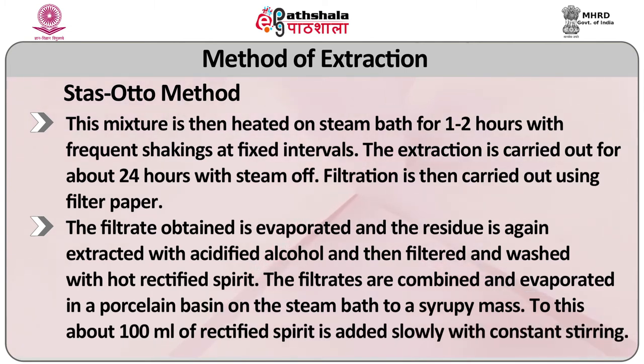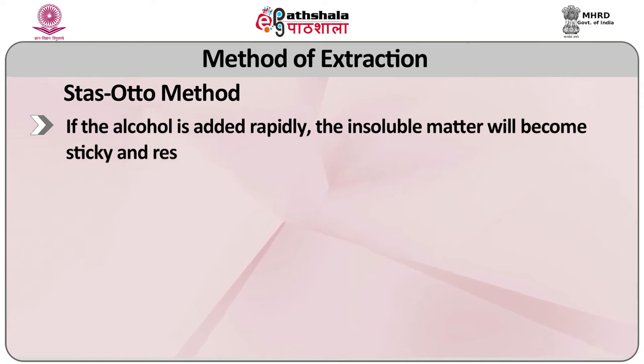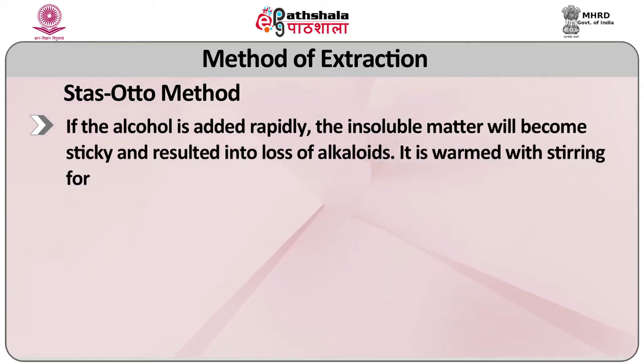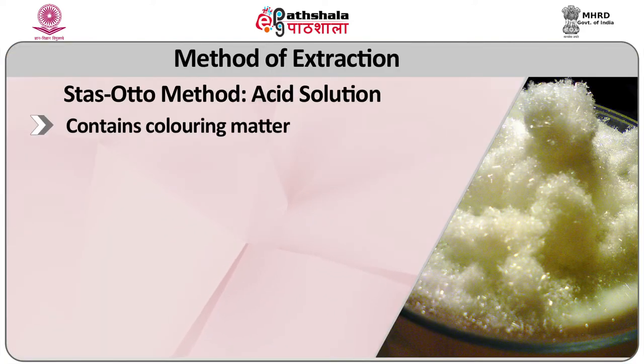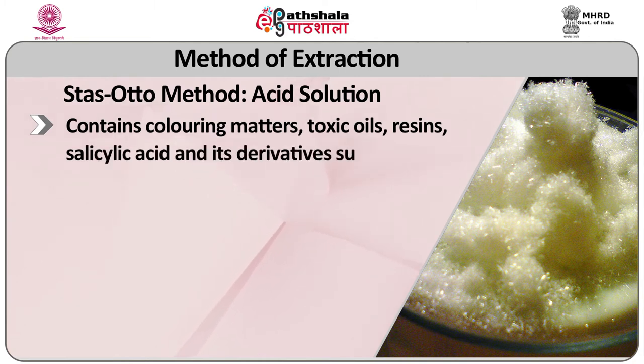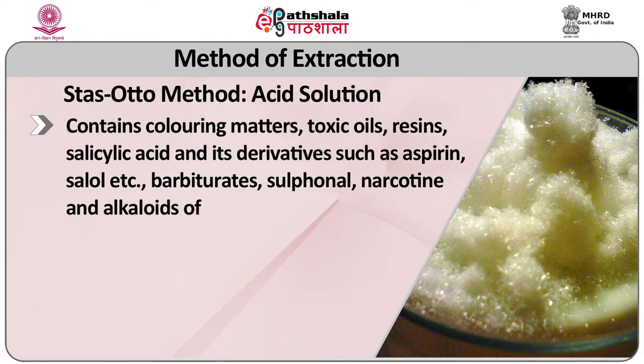About 100 ml of rectified spirit is added slowly with constant stirring. If the alcohol is added repeatedly, the insoluble matter will become sticky and result in loss of alkaloids. It is warmed with stirring for about half an hour and then filtered. This process is repeated once more and the alcoholic extracts are combined and evaporated to dryness. The residue is dissolved in about 50 ml of water, acidified with diluted sulfuric acid and filtered after about an hour. The poisons in the aqueous layer are transferred to a separating funnel and extracted with about 25 ml of ether, chloroform, etc. The acid solution contains colouring matters, toxic oils, resin, salicylic acids and derivatives such as aspirin, barbiturates, narcotics, narcotine, and alkaloids of ergot.